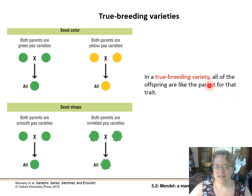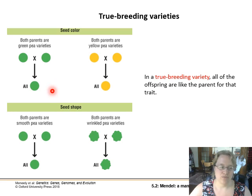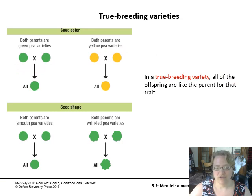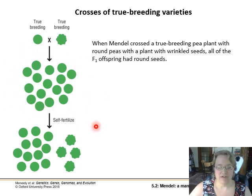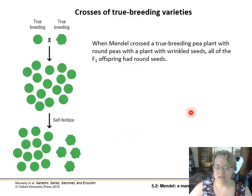A true breeding variety means all the offspring are like the parent for that trait. If you have two green peas and the offspring are always green and never change, that's a true breeding variety — generally homozygous with no other allele forming heterozygotes. When you cross true breeding varieties in the first generation, you see one trait becoming dominant over the other. Then if you self-fertilize that second generation, you see that recessive trait coming back out.